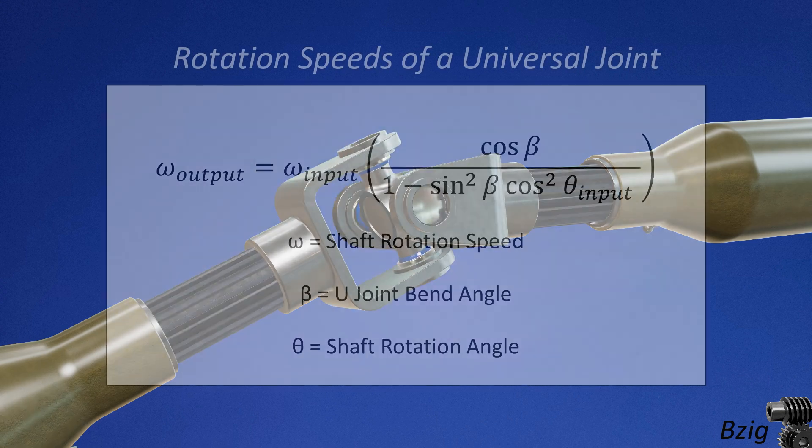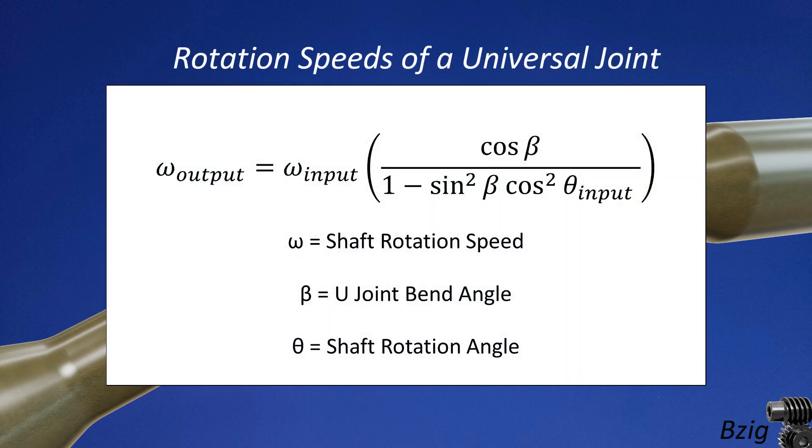The time derivative of this equation compares the two rotation speeds and can be expressed as a ratio of input rotation speed to output rotation speed. This is now shown on the screen.